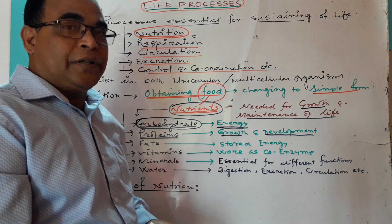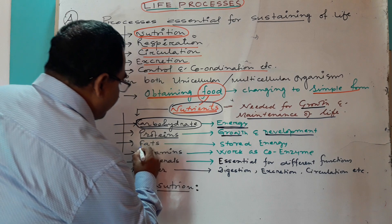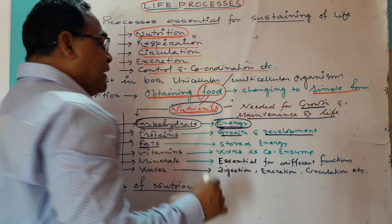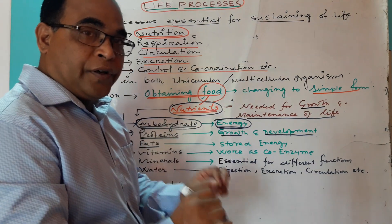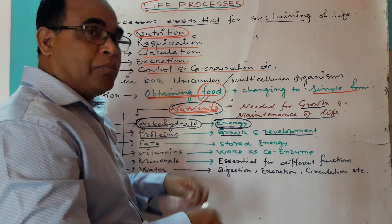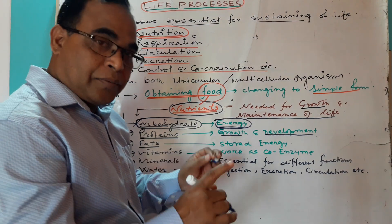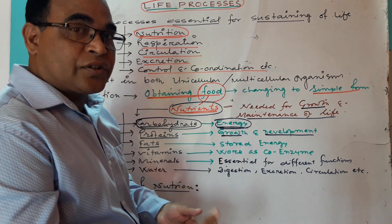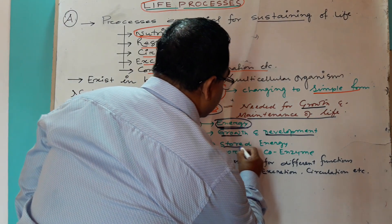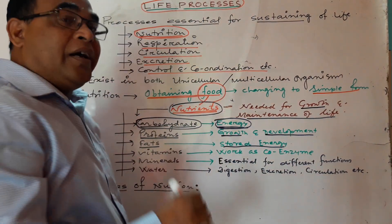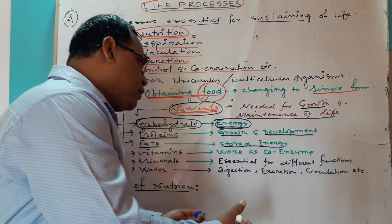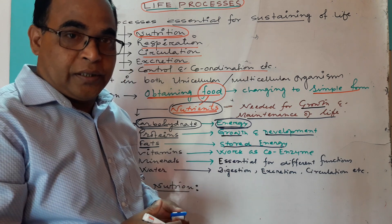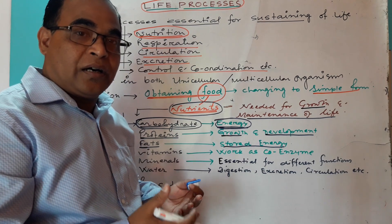Next is fats. Fats also provide us energy and it is the stored form of energy. Whenever more energy is required and carbohydrate or glucose is insufficient in our body, then fats start to degrade. Apart from providing energy, fats stored in our body also insulate some vital organs like heart, lungs, liver, etc.